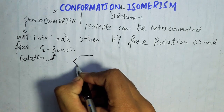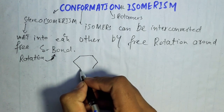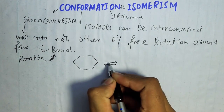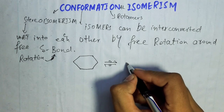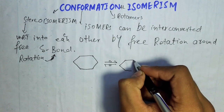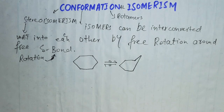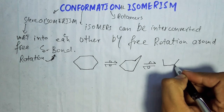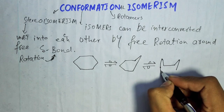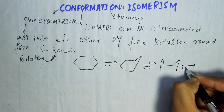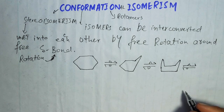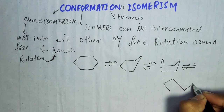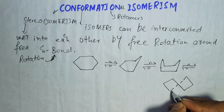A good example is the conformational analysis of cyclohexane. This is the planar structure of cyclohexane. When I flip this molecule, we get a half-chair conformation. I again flip this molecule and we get a boat conformation of cyclohexane. I again flip this molecule and we get a twist-boat conformation. This conformation is called the twist-boat conformation.